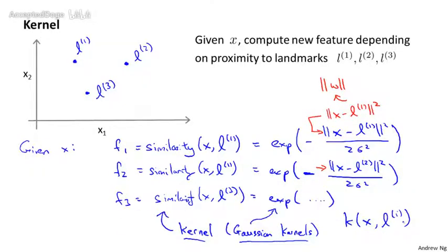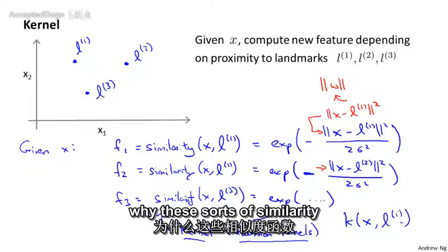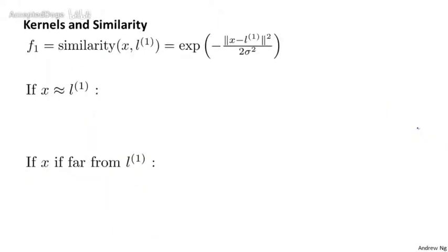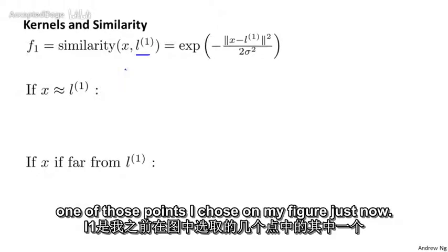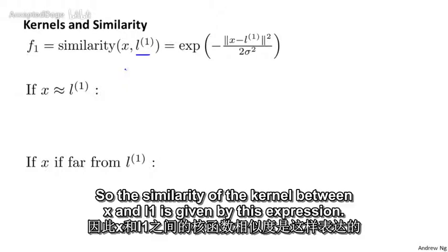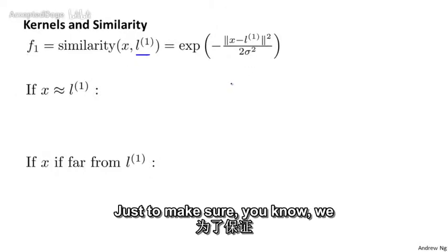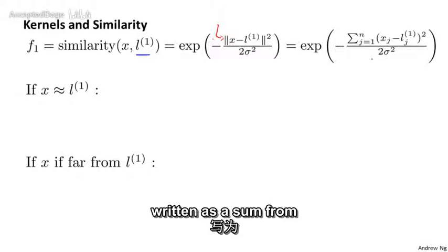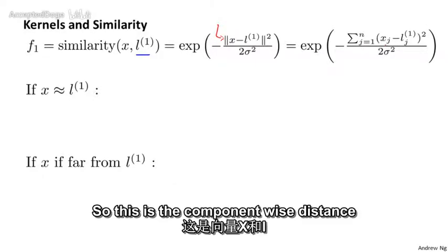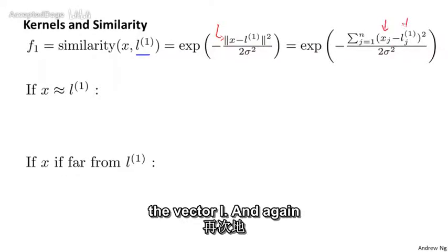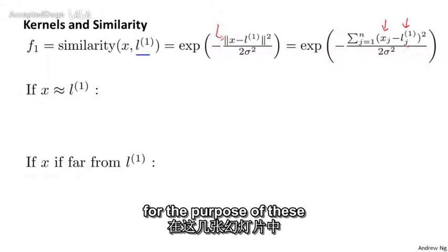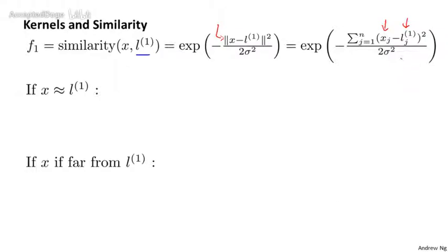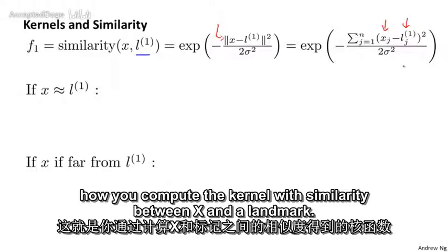Let's see what these kernels actually do, and why these similarity functions — these e to the so-on expressions — might make sense. The similarity or kernel between x and l one is given by this expression. The numerator can also be written as a sum from j equals one through n of the component-wise squared distance between the vector x and the vector l. For the purpose of these slides, I'm ignoring x zero — the intercept term, which is always equal to one. This is how you compute the kernel, the similarity between x and a landmark.